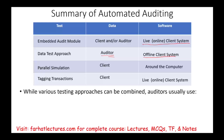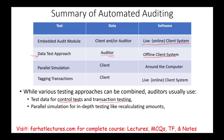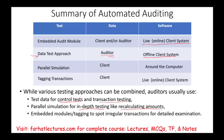Now let's look at the benefits for each approach. Auditors can combine several tests if needed. Test data is best for control testing and transaction testing. Parallel simulation is good for in-depth testing, such as recalculating amounts to confirm we arrive at the same result. Embedded module and tagging are very similar — both are used to spot irregular transactions for detailed examination.